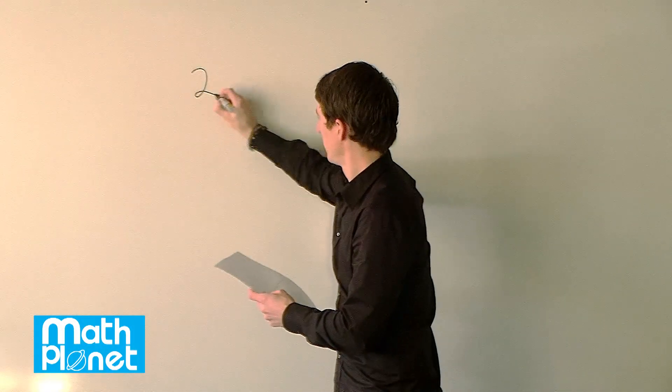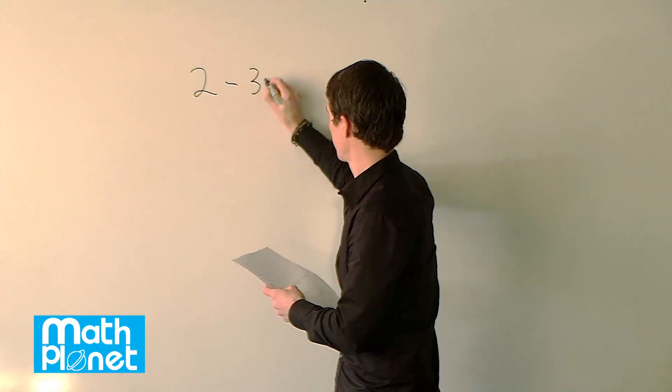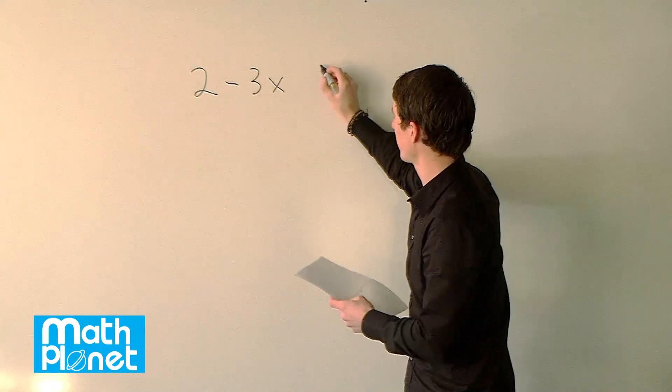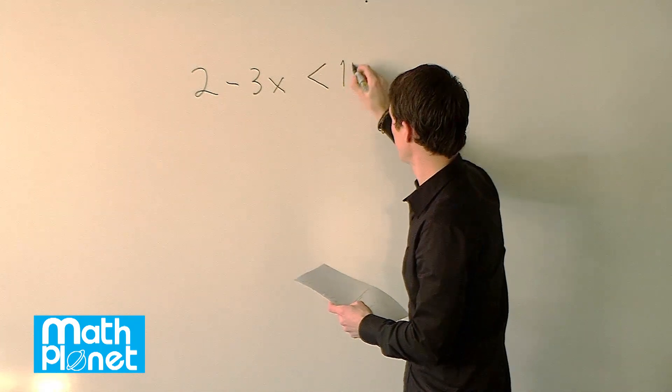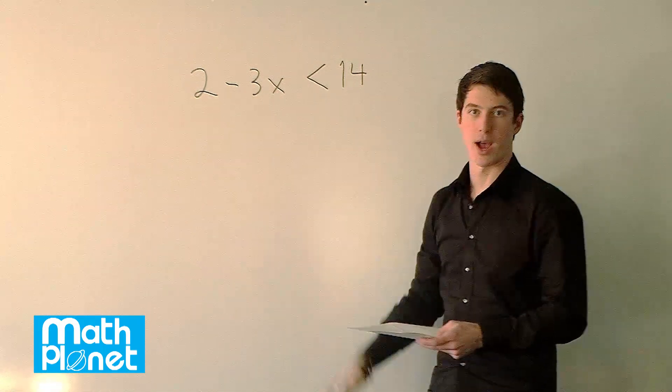Given this inequality, 2 minus 3x is less than 14, let's solve for x.